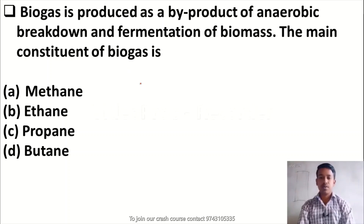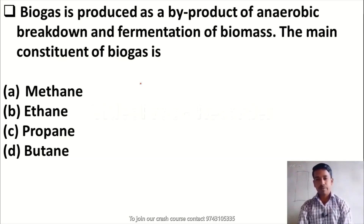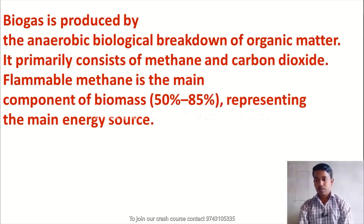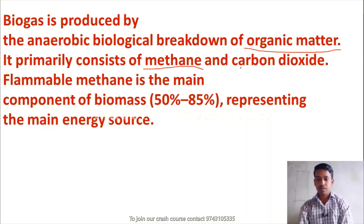Biogas is produced as a bi-product of anaerobic breakdown and fermentation of biomass. The main constituent of biogas is: Option A, methane; Option B, ethane; Option C, propane; Option D, butane. The right answer is Option A — methane. Biogas is produced by anaerobic biological breakdown of organic matter and it primarily consists of methane and carbon dioxide. Please remember: biogas consists of methane and carbon dioxide.